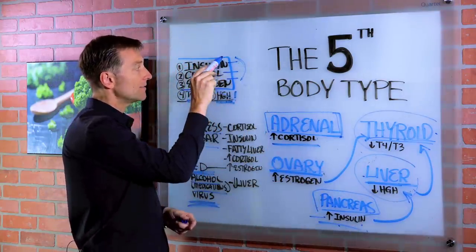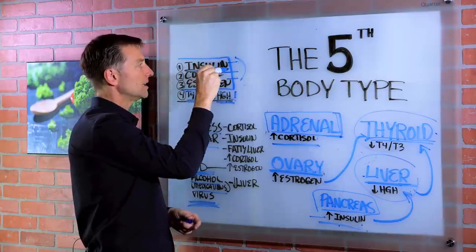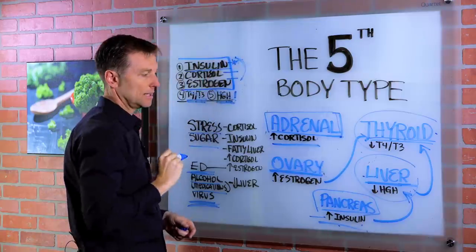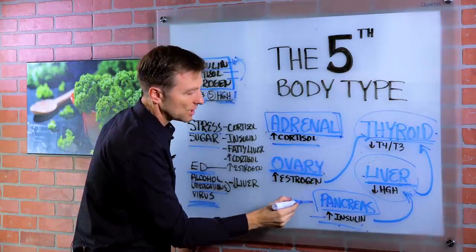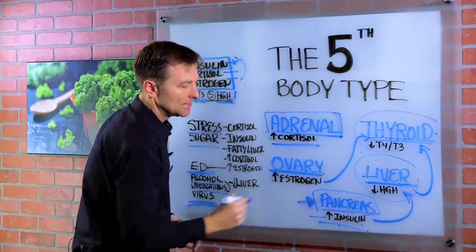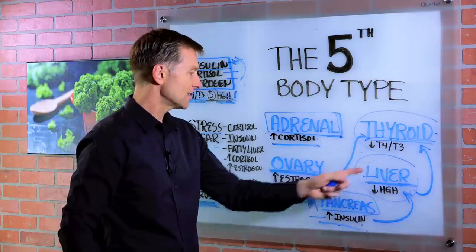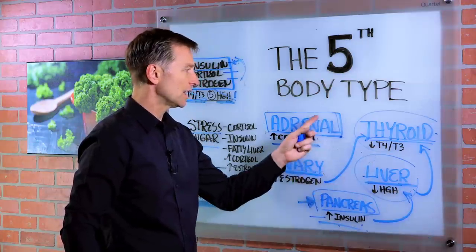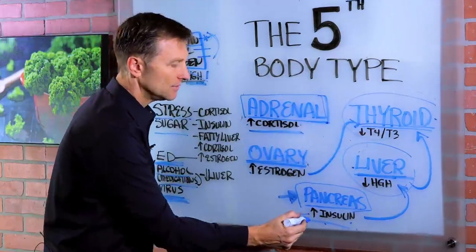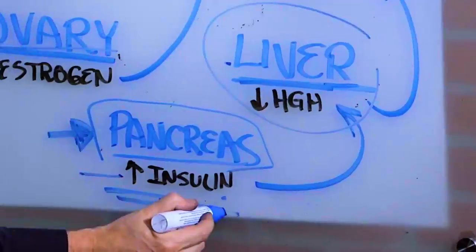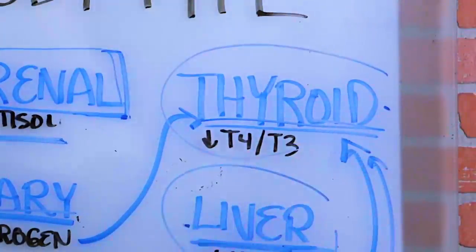Out of these three, insulin is the most dominating. So in reality, the pancreas body type is probably the most common. But you can also look like the adrenal type, the ovary type, or even the liver type because of the influence of insulin on these other glands.